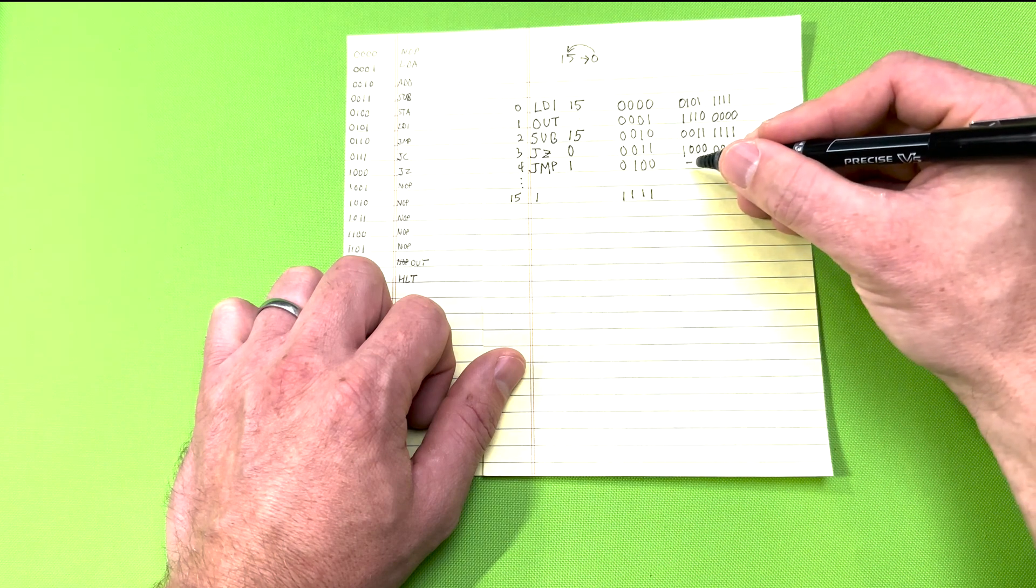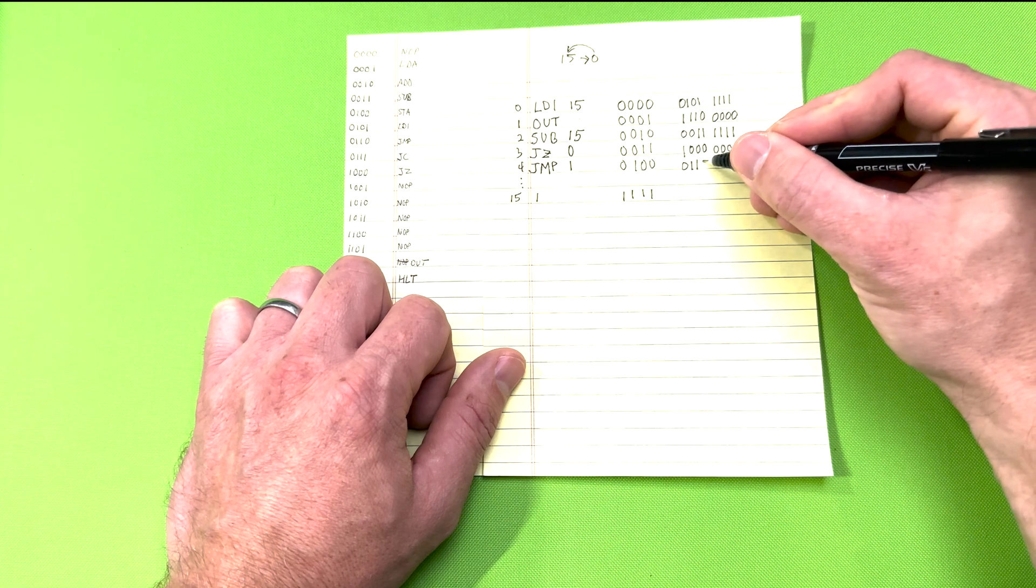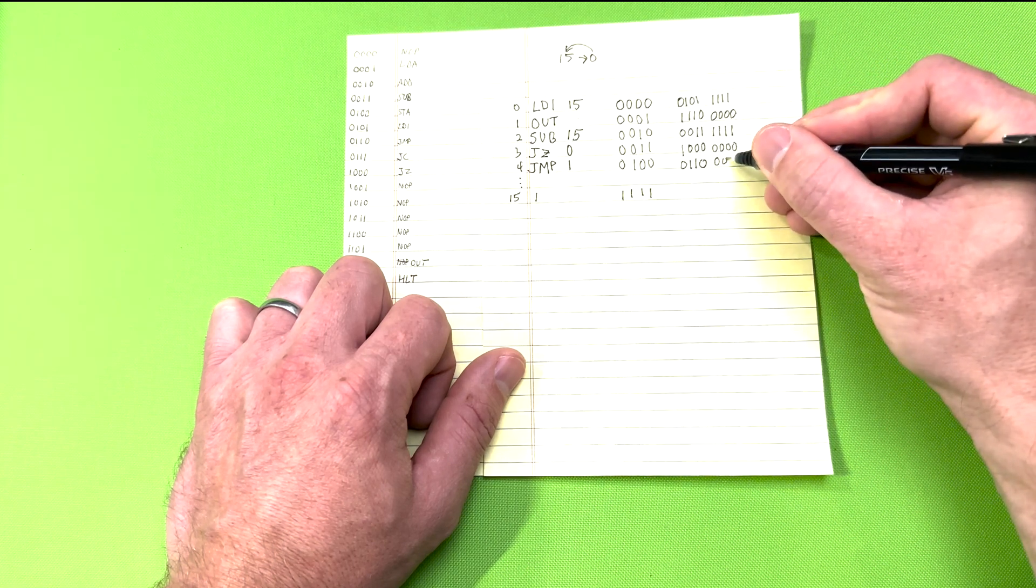The JMP instruction is 0, 1, 1, 0 and the data part is the RAM location where it will jump which is 1.